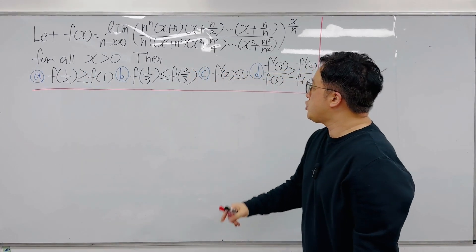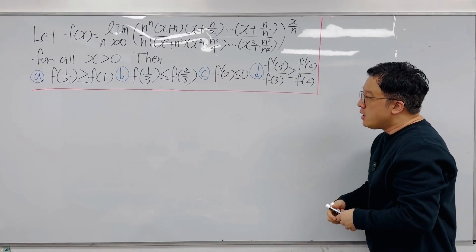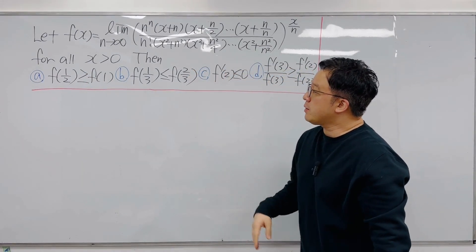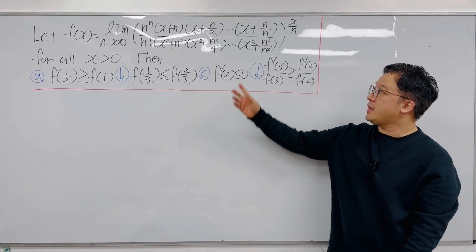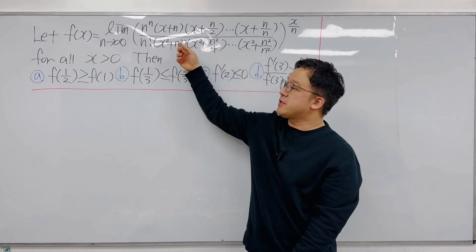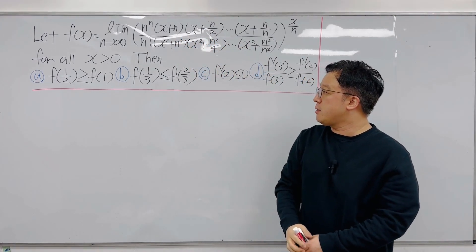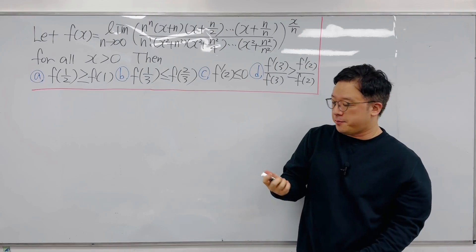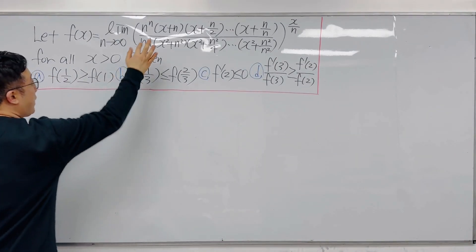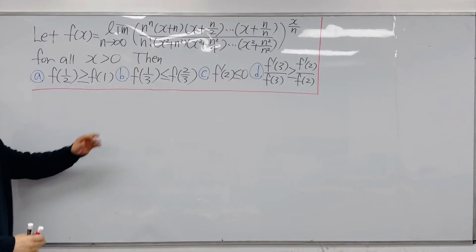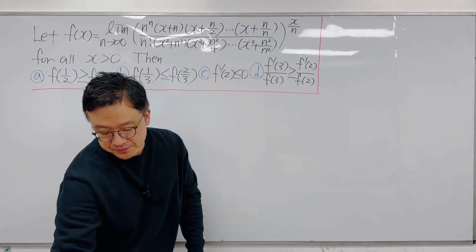We need to choose from four options. What I'm going to do first is rewrite the inside of this parenthesis using the product operator. So let's first rewrite this expression inside the parenthesis.